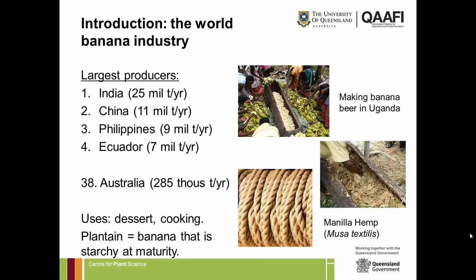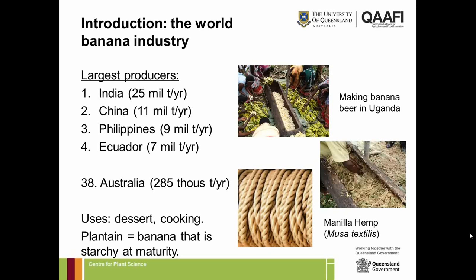It's often a standing joke that someone would spend their life working on bananas, but it's actually a very important fruit around the world. The four largest producers are India, China, the Philippines, and Ecuador. Australia comes a lowly 38th in the rankings, usually lumped together with the rest of Oceania at less than 0.1% of world production.